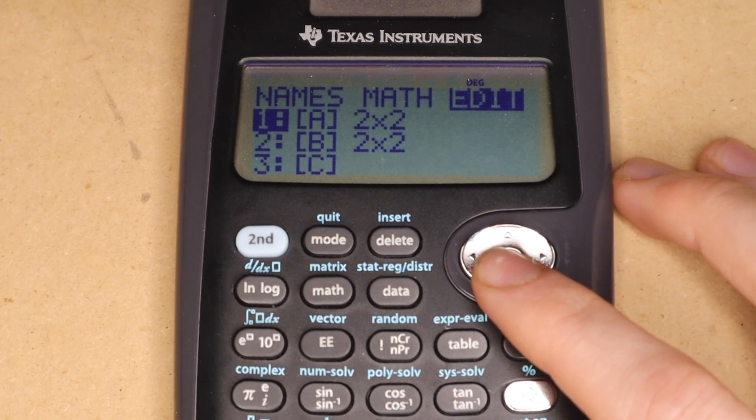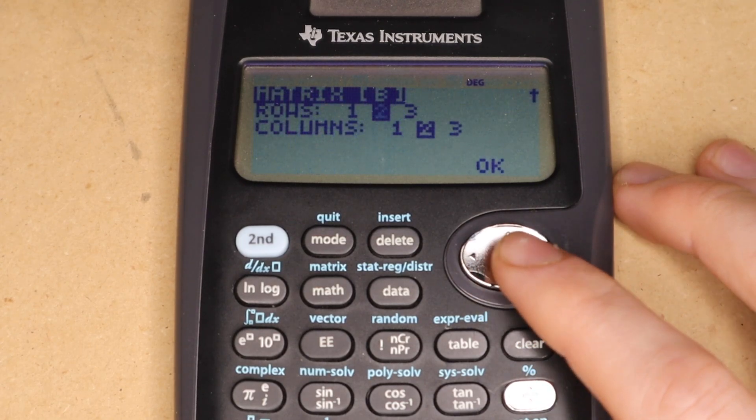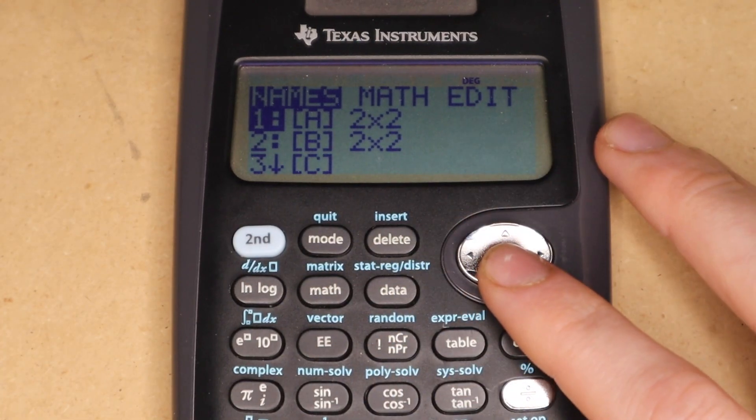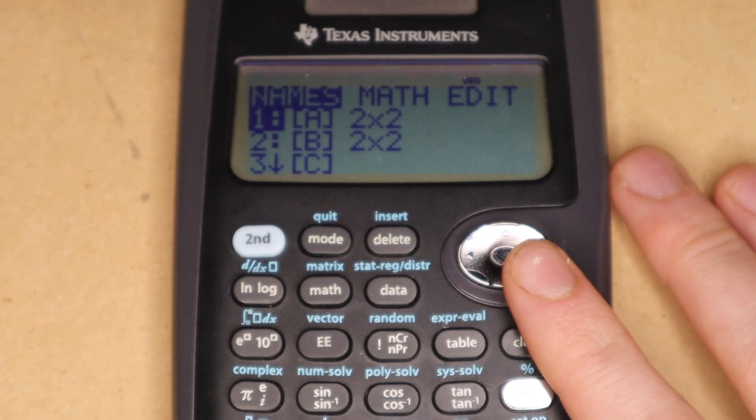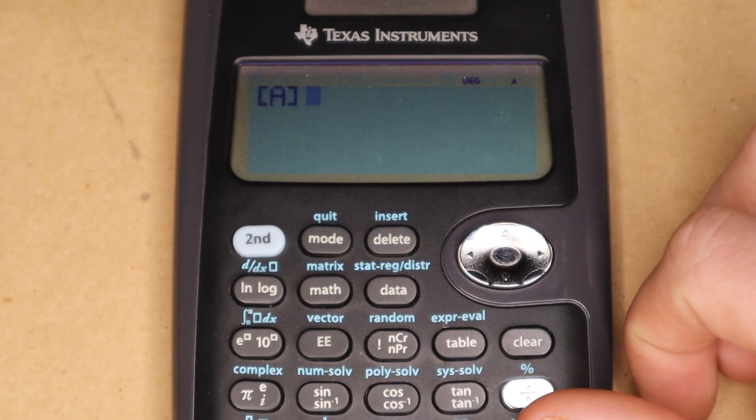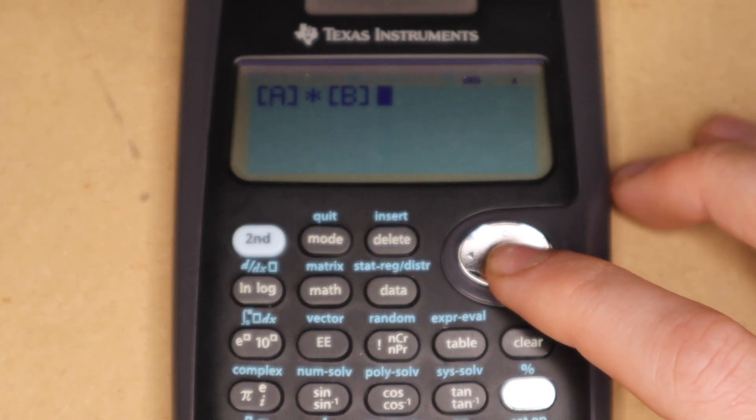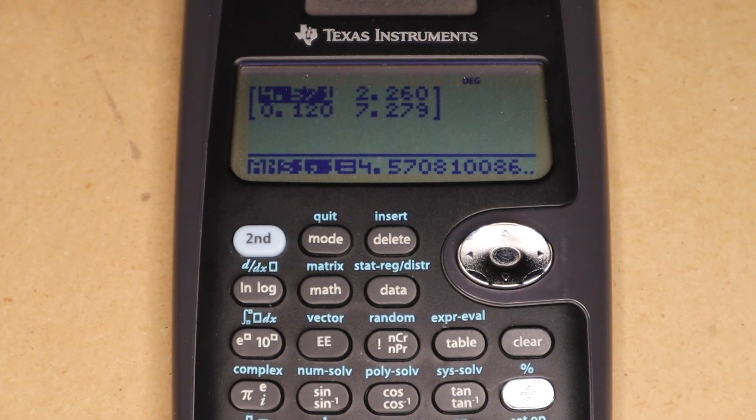And of course, you can perform matrix multiplication. Here I have my first matrix A and matrix B, which looks like this. If I want to multiply those two together, I just bring them both into the calculation screen. Matrix A times matrix B, and then press enter. And it will give me the result for multiplying those two together.